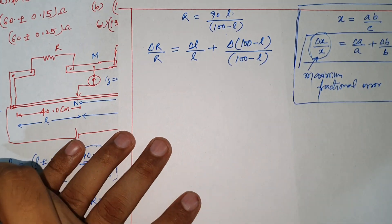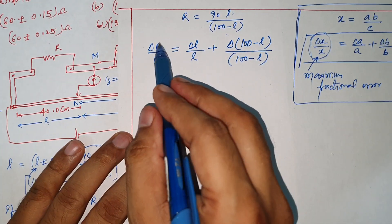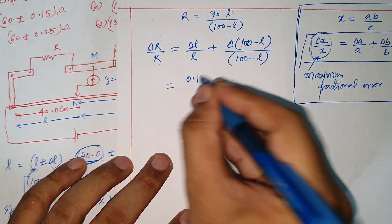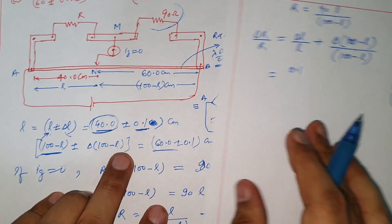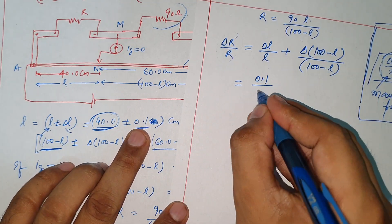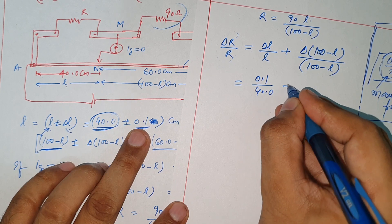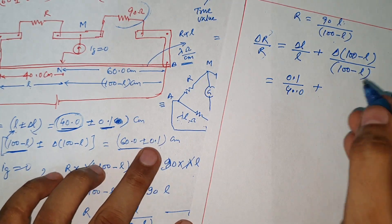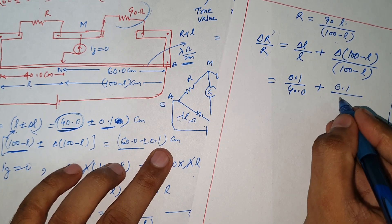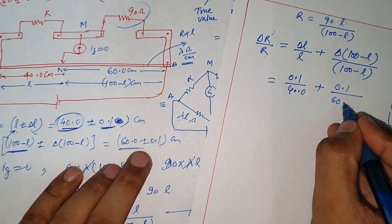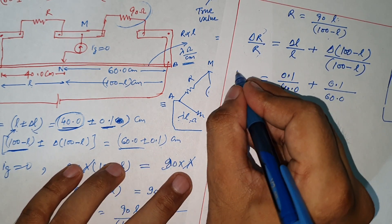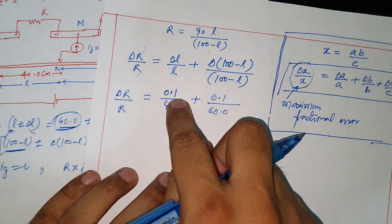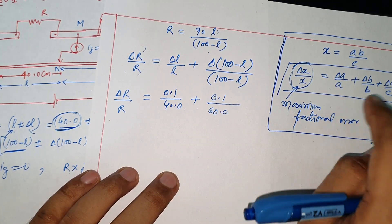You can see that this is the maximum fractional error. Delta L is 0.1 cm, divided by L which is 40.0, plus this value 0.1 divided by 100 minus L which is 60.0. So we put delta R upon R equal to 0.1 over 40.0 plus 0.1 over 60.0.